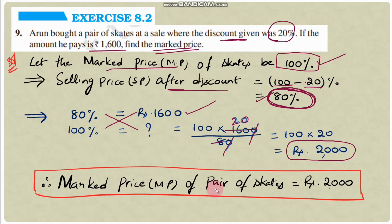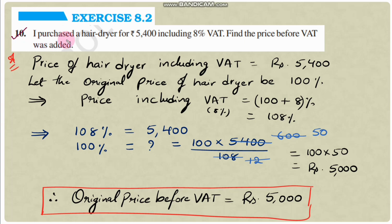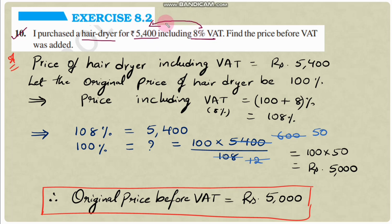Question number 10: I purchased a hair dryer for ₹5400 including 8% VAT. Find the price before VAT was added. So the hair dryer was purchased at ₹5400, and this price includes the VAT. We need to find the price before VAT was added, that is the original price.